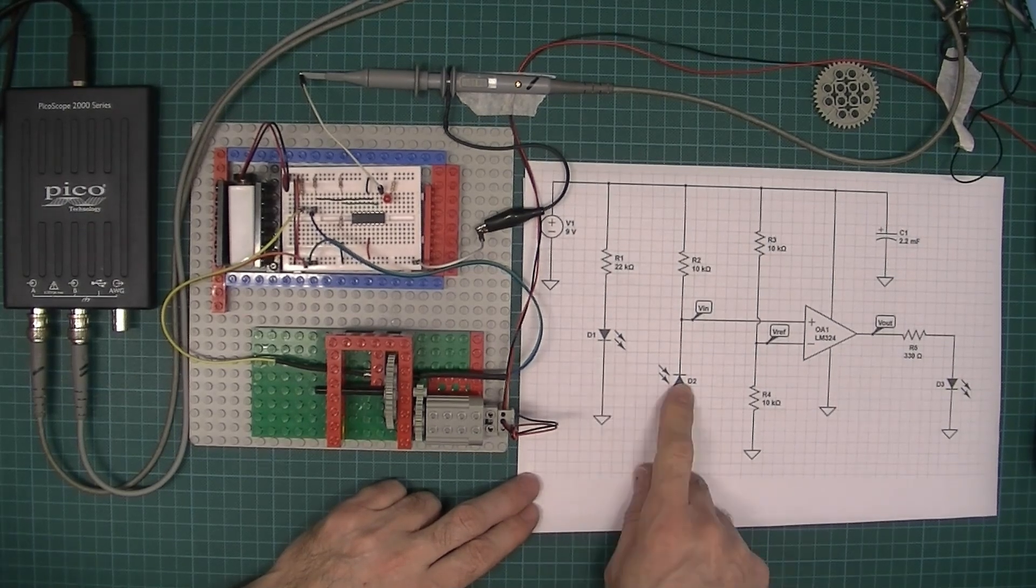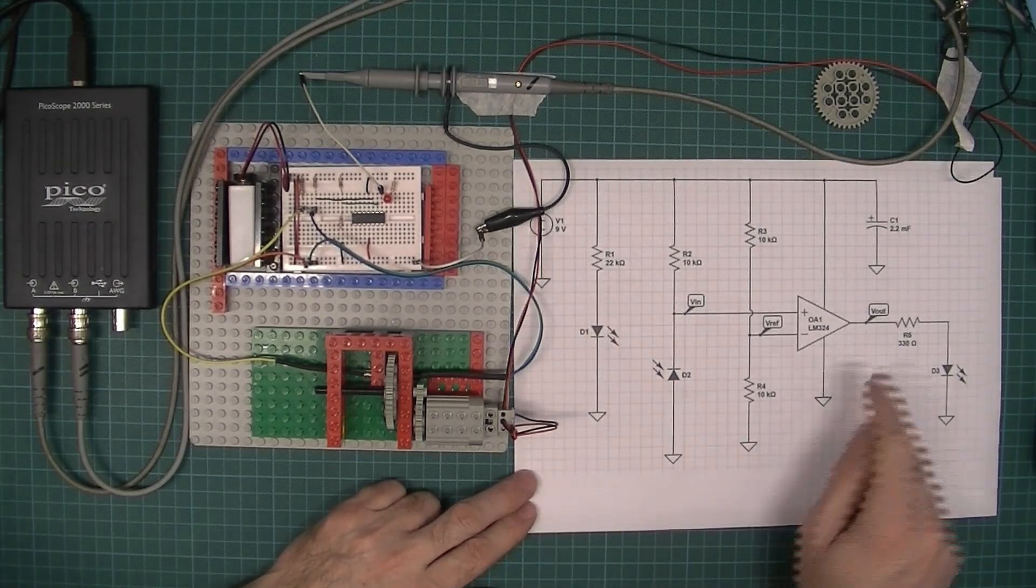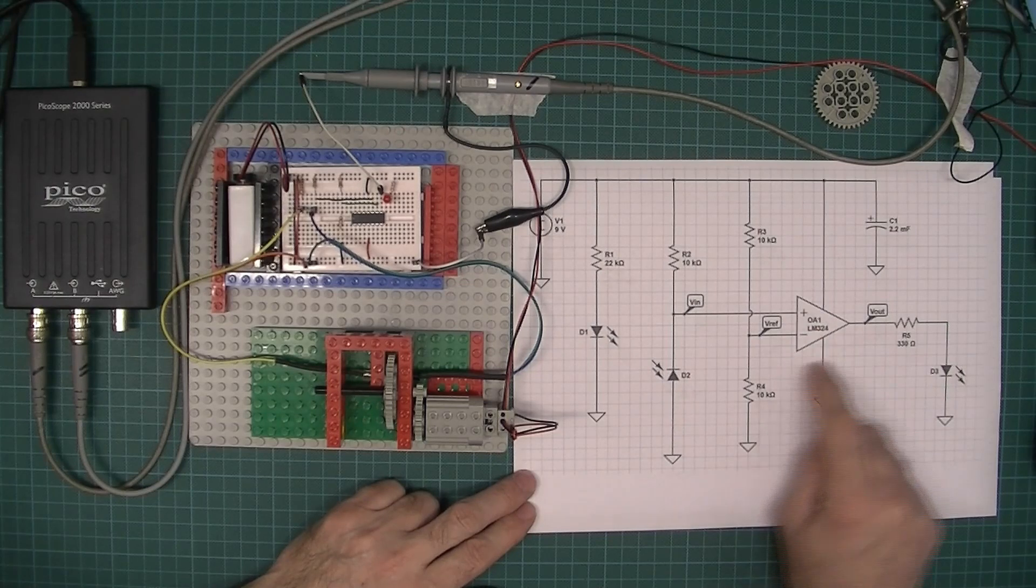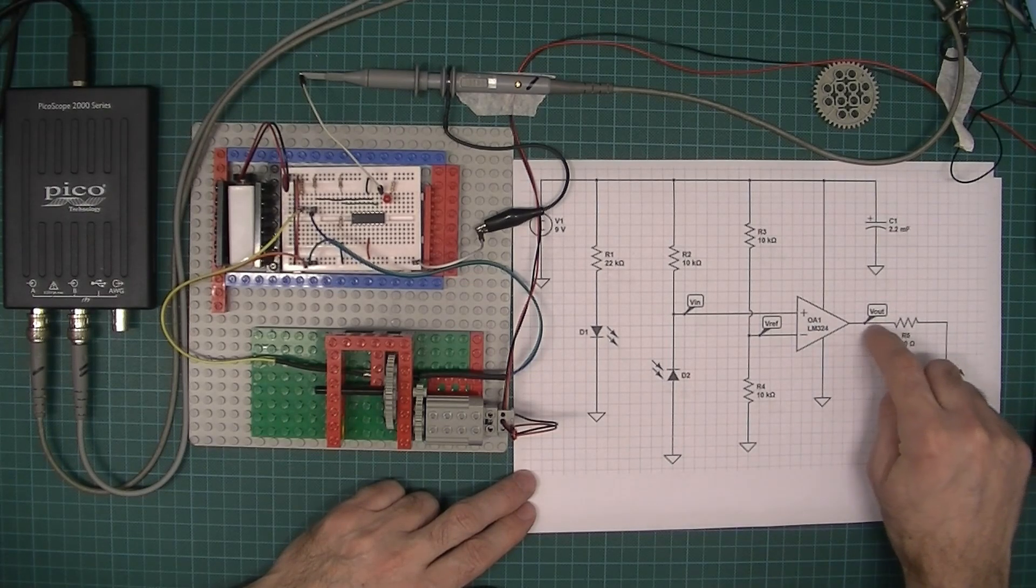I'm using an emitter detector pair, infrared, and I'm using an op-amp to clean up that signal. I'm going to probe here so that's the frequency I'm going to measure.